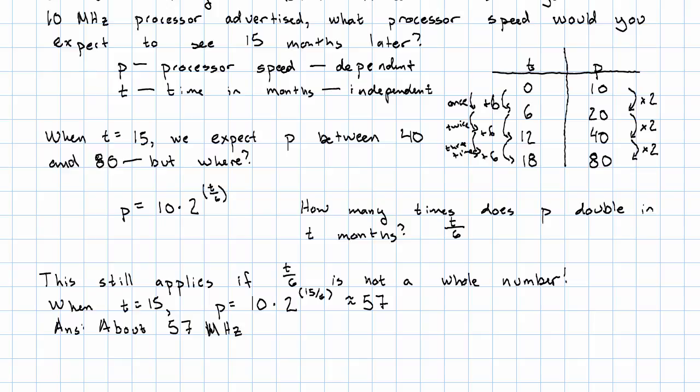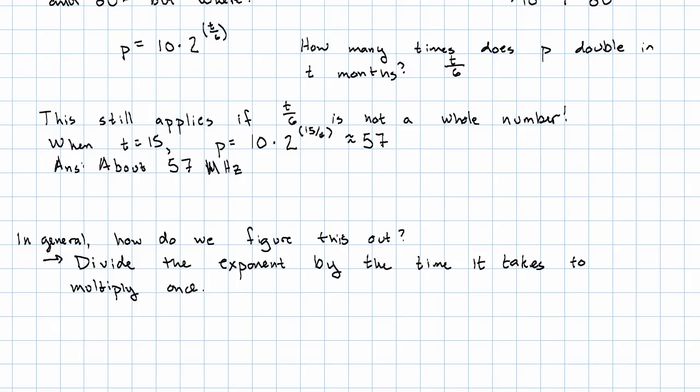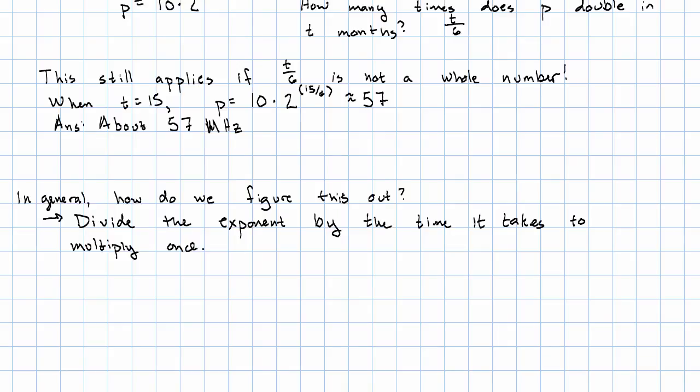So in general, how do we figure this out? Simply enough, we divide the exponent by the time it takes, or in general, by the increase in the independent variable, in order to get the multiplier to apply once.